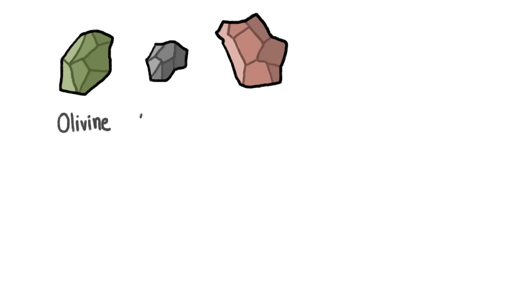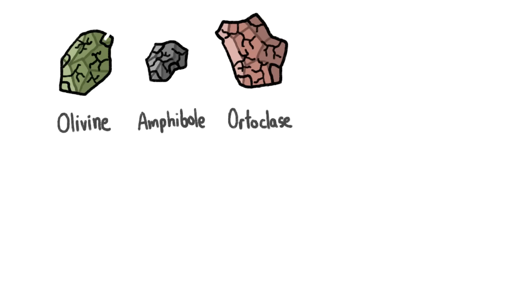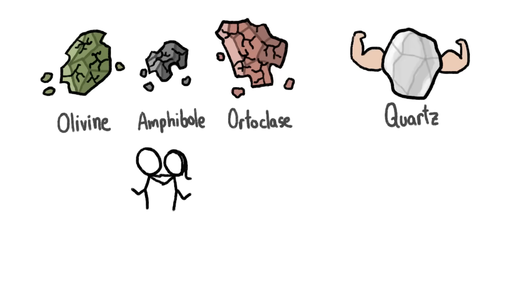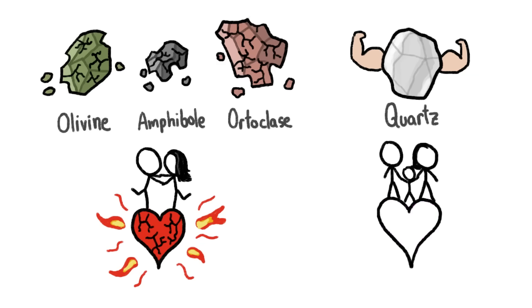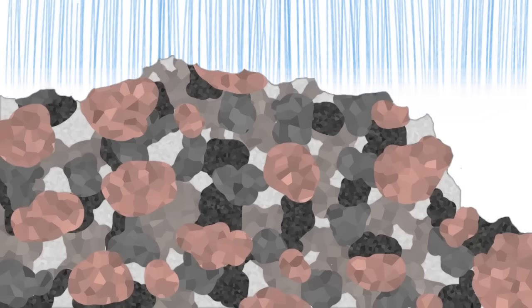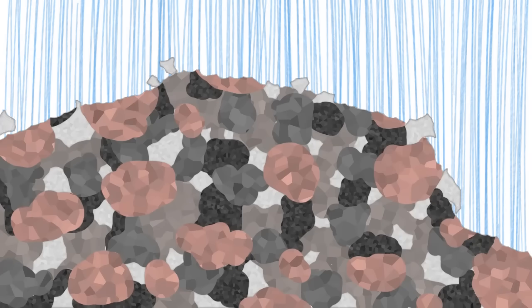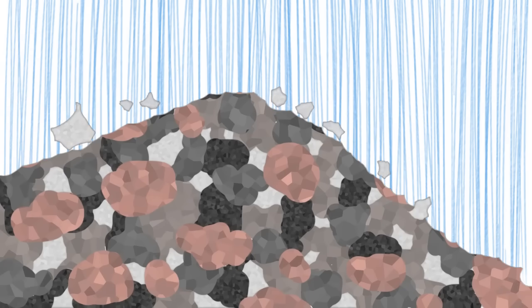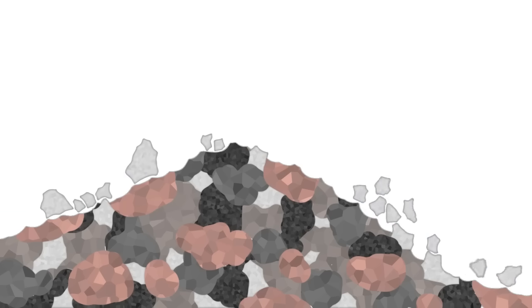Minerals that form in the earlier, hotter conditions have weaker chemical structures and weather away more easily than quartz, kind of like how a relationship forged in the heat of passion might not be as stable as a deep bond developed over time. So as the weak, flash-in-the-pan minerals wear away, the unfaltering quartz grains are left to pop out of the rock as sand.